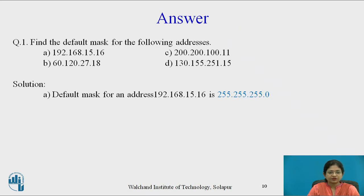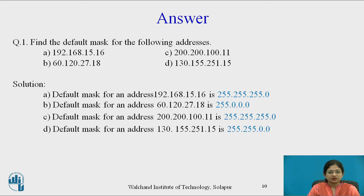Here is the solution. For the first address 192.168.15.16, the default mask is 255.255.255.0 because it belongs to Class C. For the second address, 60.120.27.18, the default subnet mask is 255.0.0.0 because it belongs to Class A. The third address belongs to Class C and the fourth address belongs to Class B, so its default mask is 255.255.0.0.